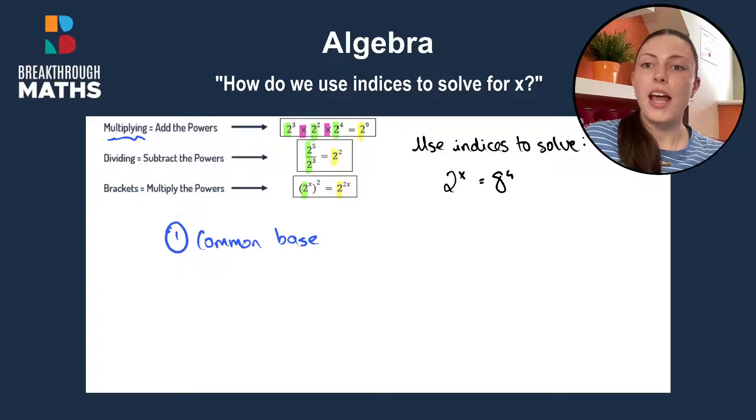If we are dividing, we subtract the powers. So we'll have 5 minus 3 which will give us the power of 2, keeping our common base of 2 the same.